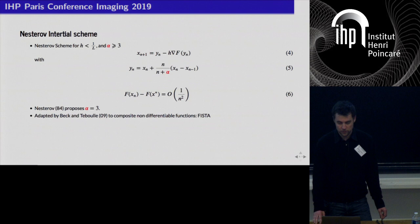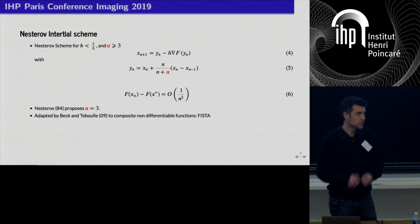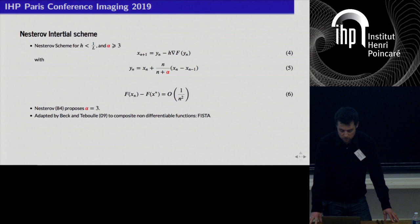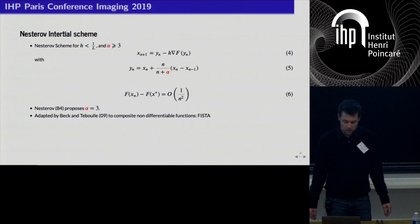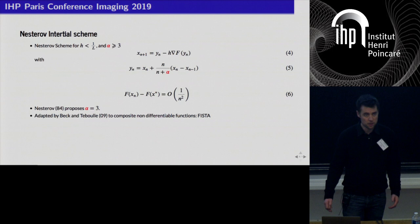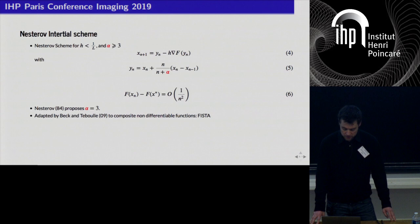To be precise, in this seminal work Nesterov proposed the choice alpha equal to 3, which minimizes the constant hidden in the big-O. All the analysis applies for any alpha bigger than 3, and this choice alpha equal to 3 was used for 30 years, especially for any extension of this algorithm such as FISTA.